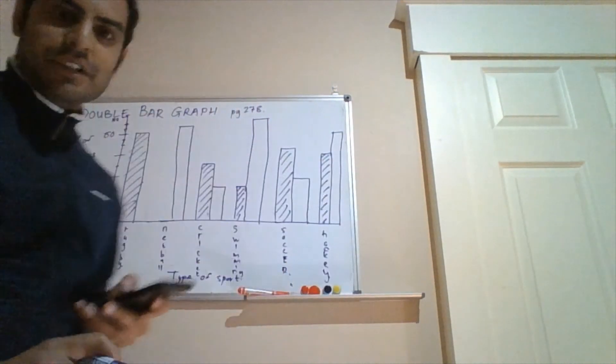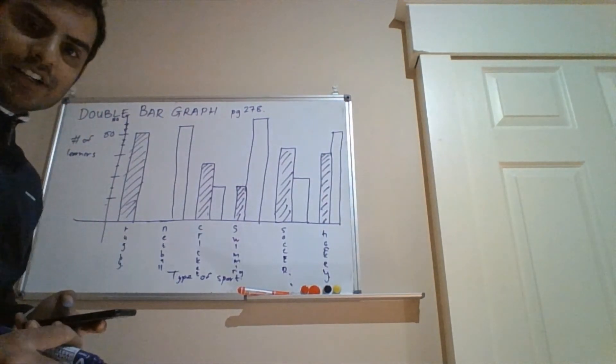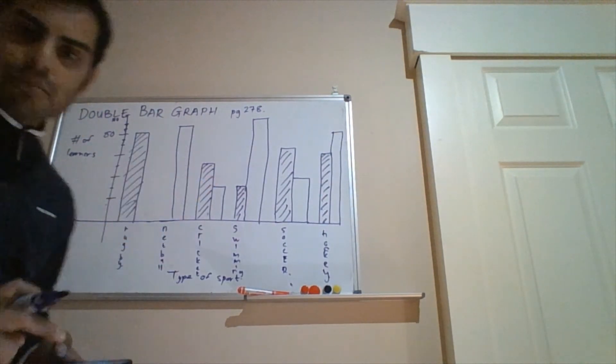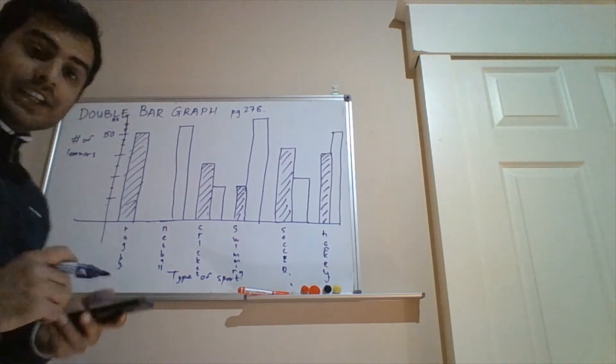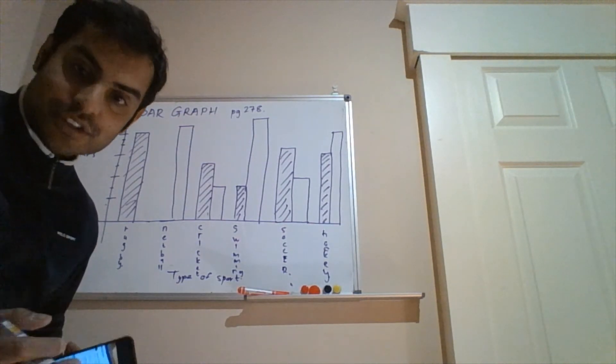Okay, so that concludes this section. Let me just stand out of the way. So it's not the neatest of graphs, but it captures all the relevant information. So next, we're going to move on to the histogram. So for the histogram, we're going to look at the worked example at the bottom of page 279.